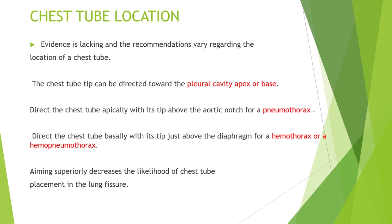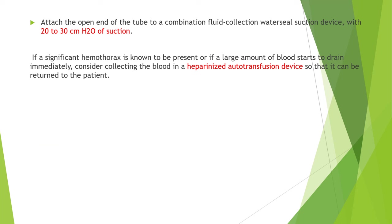Chest tube location: The chest tube tip can be directed toward the pleural cavity apex or base. Direct the chest tube apically with its tip above the aortic arch for a pneumothorax, and direct the chest tube basally with its tip just above the diaphragm for a haemothorax — because air collects at the apex and blood collects dependently at the base. Aiming superiorly decreases the likelihood of chest tube placement within the lung parenchyma. Attach the open end of the tube to a combination fluid collection, water-seal suction device with 20 to 50 centimeters of water suction. If a significant haemothorax is present or large amounts of blood drain immediately, consider using an autotransfusion device to collect the blood so it can be returned to the patient.